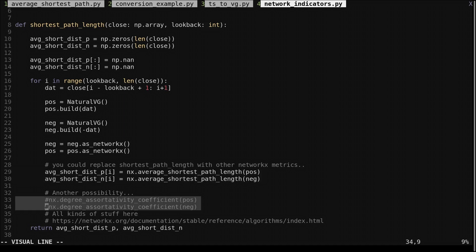NetworkX has several other graph metrics. For example, assortativity. You can replace the average shortest path function with something else if you want to experiment. Anyways, let's use the function.